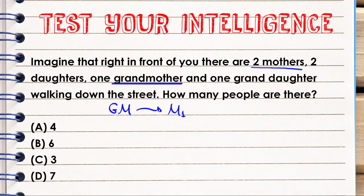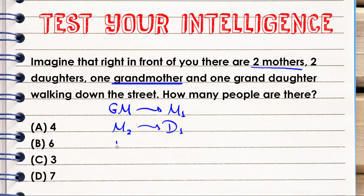So we have two mothers: one is the grandmother, and the other is her daughter — mother number two. Mother number two is of course a mother, and she is also a daughter — daughter number one — because she is the daughter of the grandmother. Then we have this mother's daughter, who will be daughter number two, and daughter number two is the granddaughter.